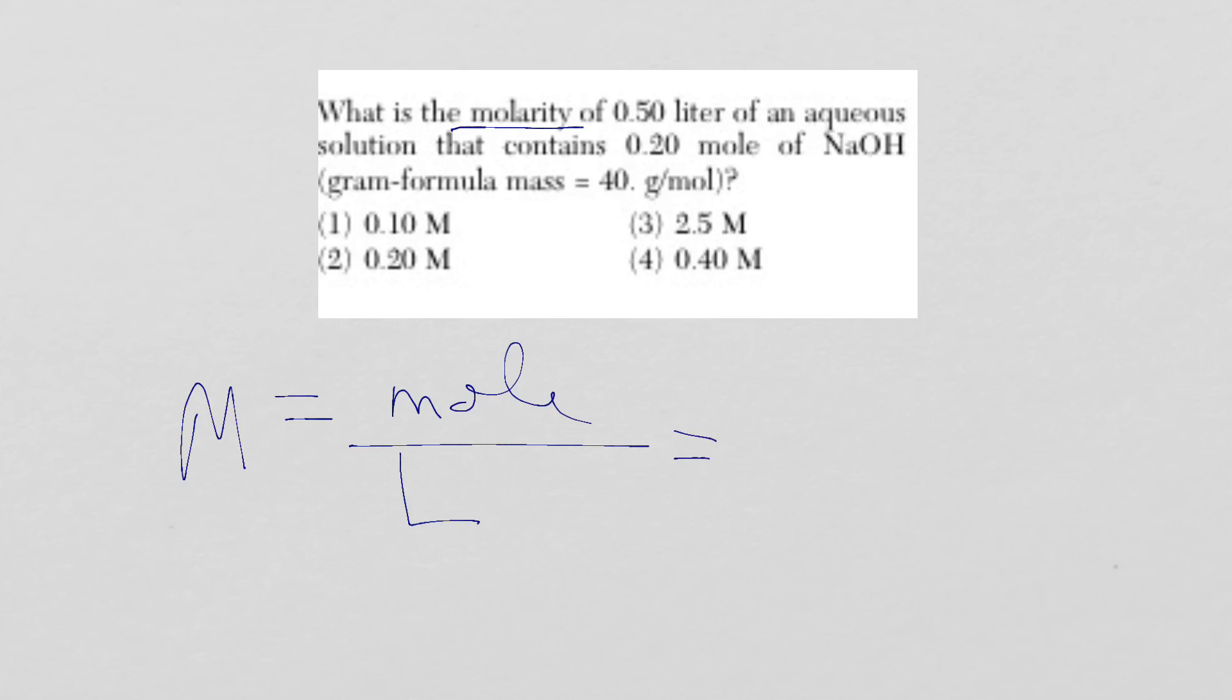Molarity is equal to moles of solute over liters of solution. So it is 0.2 moles over 0.5 liters. Now, you see they gave you the gram formula mass. But you don't need the gram formula mass to do the calculation. So they're trying to throw you off. Be smart about it. And you're not looking for mass. You're looking for a molarity. So it's just going to be 0.2 divided by 0.5. And the answer is 0.4 molar.